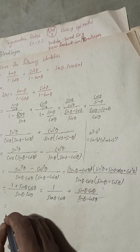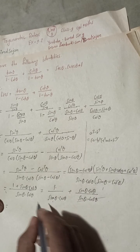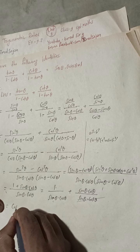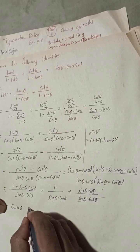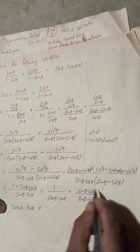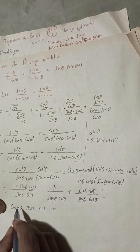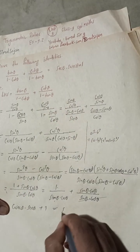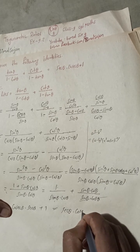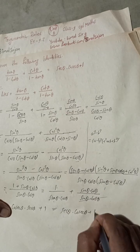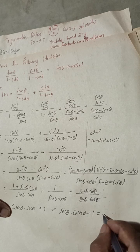So now 1 / sin θ = cosec θ and 1 / cos θ = sec θ. Both cancel appropriately, and there is plus 1. So this equals sec θ + cosec θ + 1, which equals RHS.